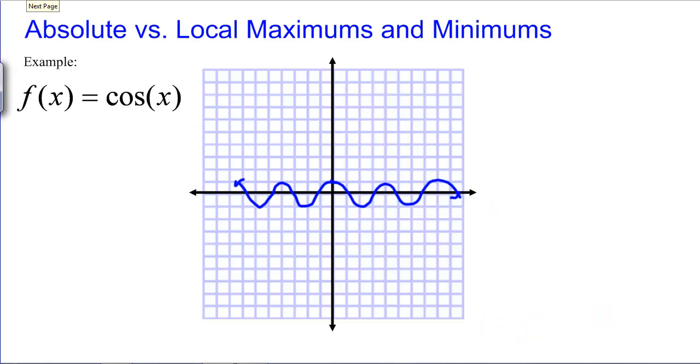There can be multiple local or absolute maxes. Here there is a local max at each of these places and that is also the absolute max. The absolute max of cosine has a Y value of 1.